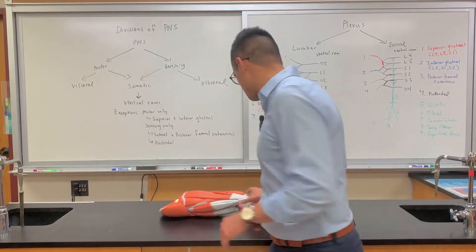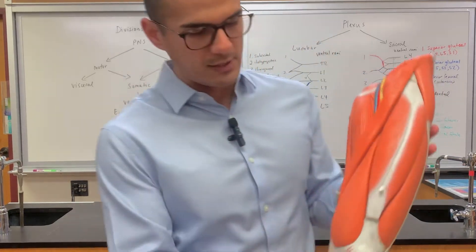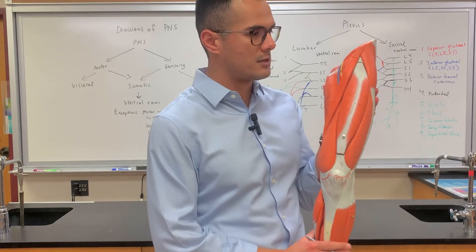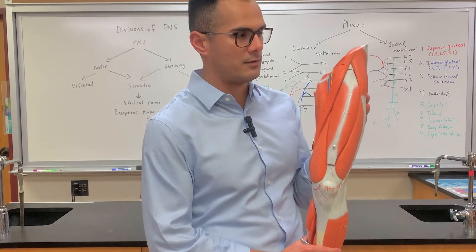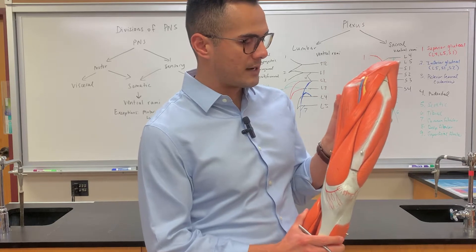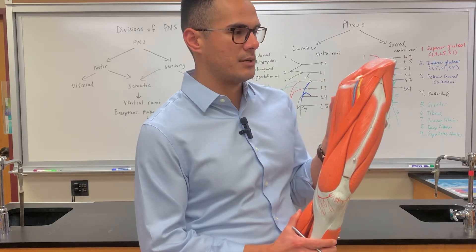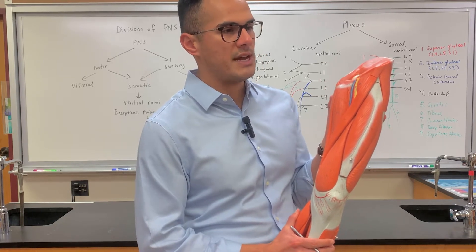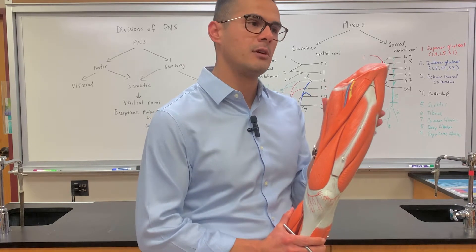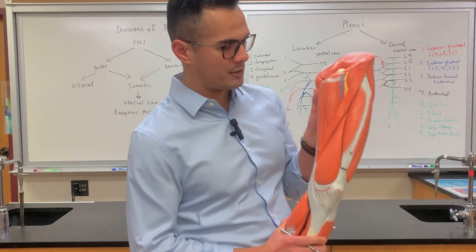First thing we want to do is always orient ourselves. Looking at the anterior view of the leg, the first nerve I'm going to point out is what's known as the femoral nerve. It's named based off of the region - like the femur, where the thigh is. So this is the femoral nerve.